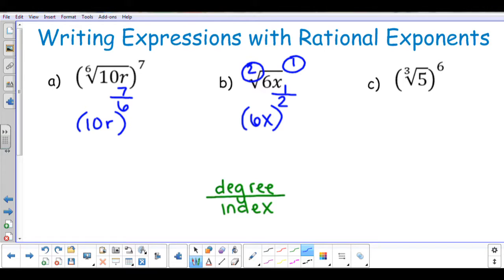In (c), I have a base of 5. The exponent is 6. The index is 3. So I have 5 to the 6/3. 6 over 3 can simplify down to 5 squared, and 5 squared would give us 25.